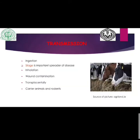Listeriosis is transmitted through ingestion of feed and water contaminated with saliva, feces, nasal discharges, and aborted fetal material. Soil acts as a potential source of transmission. Poor quality silage is an important spreader of this disease because poor quality silage with a pH greater than 5 provides a good multiplication site for Listeria.